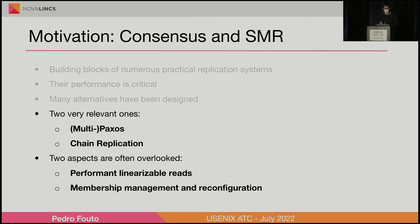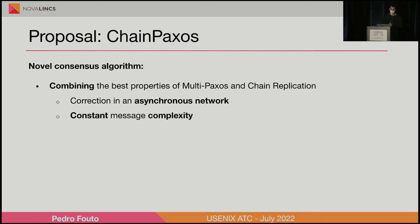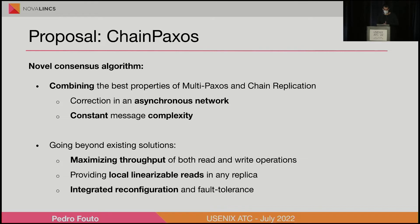All of this leads to our proposal: a new consensus algorithm we call Chain Paxos, which as you can guess combines properties of both MultiPaxos and chain replication. Namely, it uses the correctness guarantees in an asynchronous network provided by MultiPaxos but has constant message complexity. Our proposal also minimizes the throughput cost of both reads and write operations, provides local linearizable reads on any replica without any extra communication, and integrates reconfiguration and fault tolerance in the algorithm itself.